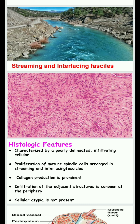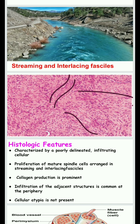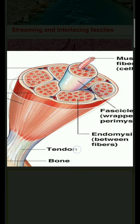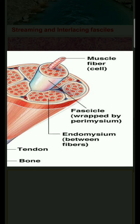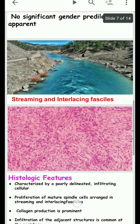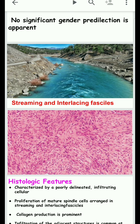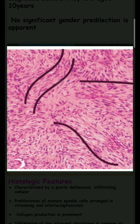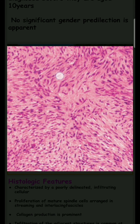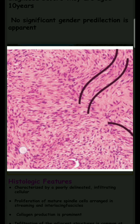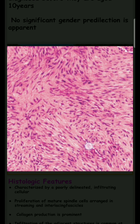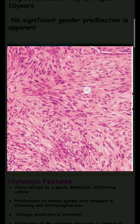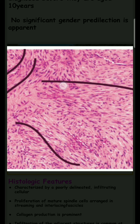Histologically, the proliferation of mature spindle cells are arranged in streaming and interlacing fascicles. Fascicles means a group of muscle fibres. Those muscle fibres are arranged in an interlacing manner and look like a streaming river. As seen here, the fibers display a streaming and interlacing pattern — the group of fibrous muscles are arranged in this streaming pattern.